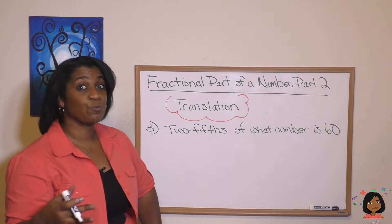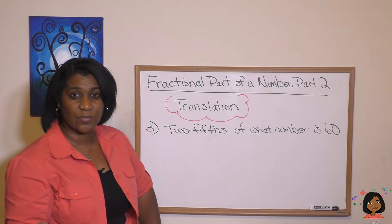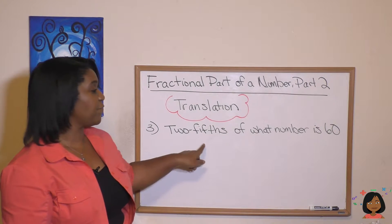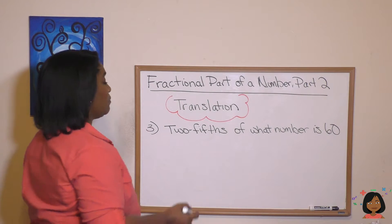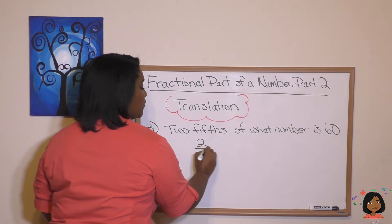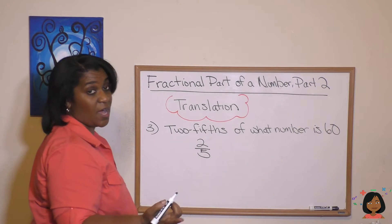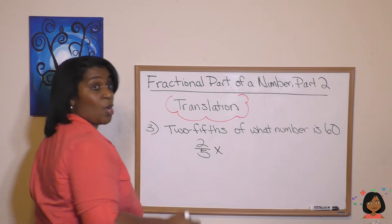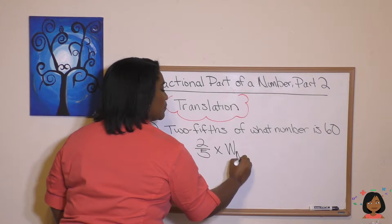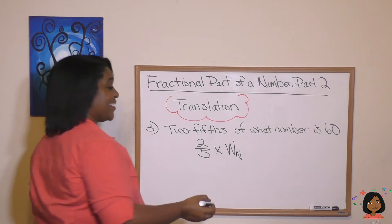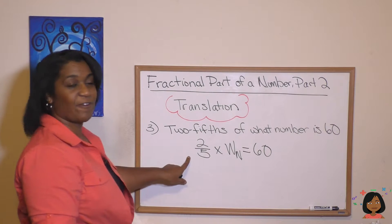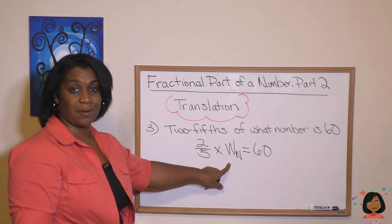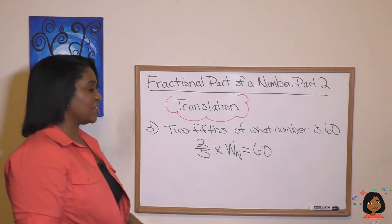What if our sentence is written a little bit differently? Does it still work the same? Here we have two fifths of what number is 60? Well, let's translate. Two fifths of what number is 60. So we have a fraction, we're looking for the number, and then we have equal 60.